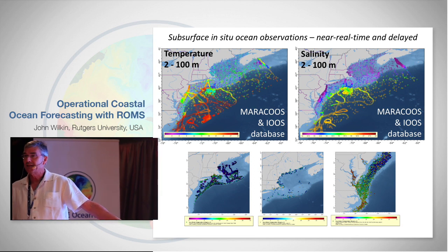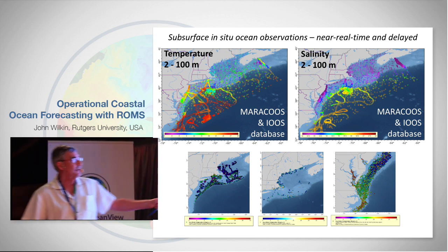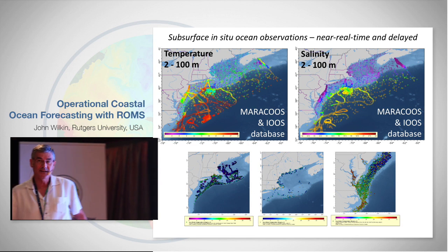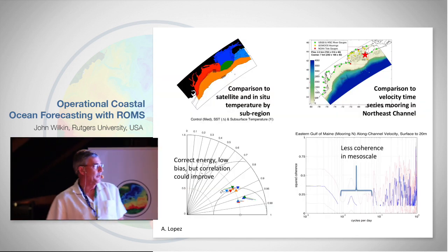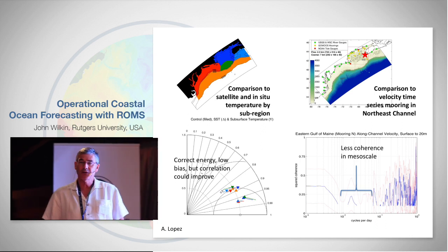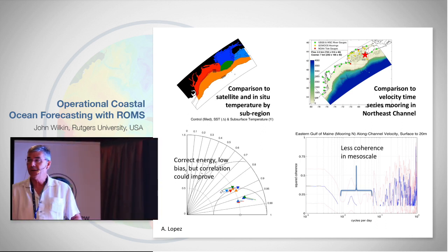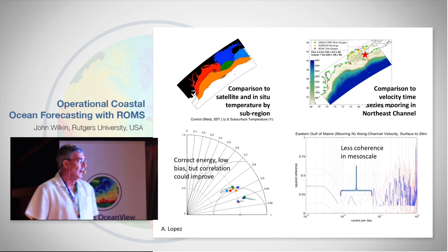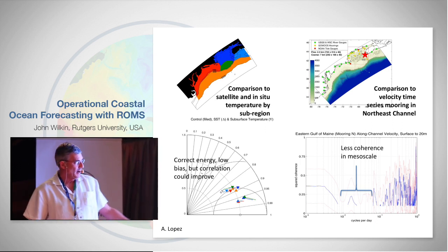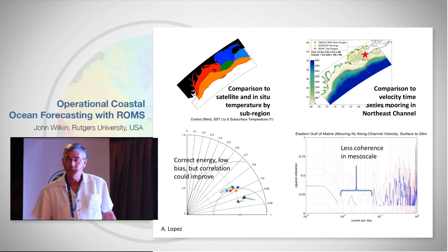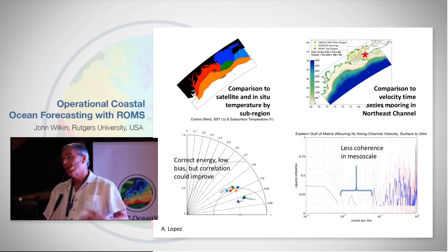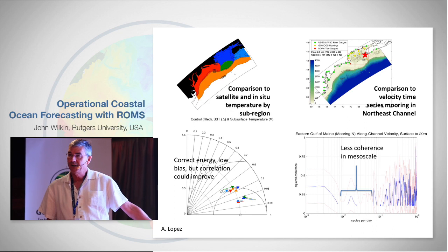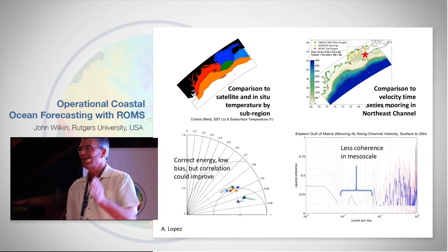I described all the lengths we go to to acquire all the observations we can — things available in real time, and delayed mode observations from turtles, lobsters, and the fishing fleet. I ran that through a skill assessment, and my conclusion on Tuesday was: we've got a pretty good modeling system running as a free model with good boundary conditions, good forcing, and good river flows. When we look at a Taylor diagram, we're falling on radius equals one for the normalized error, so the model has about the right mesoscale energy, but the correlation is not as high as we'd like.